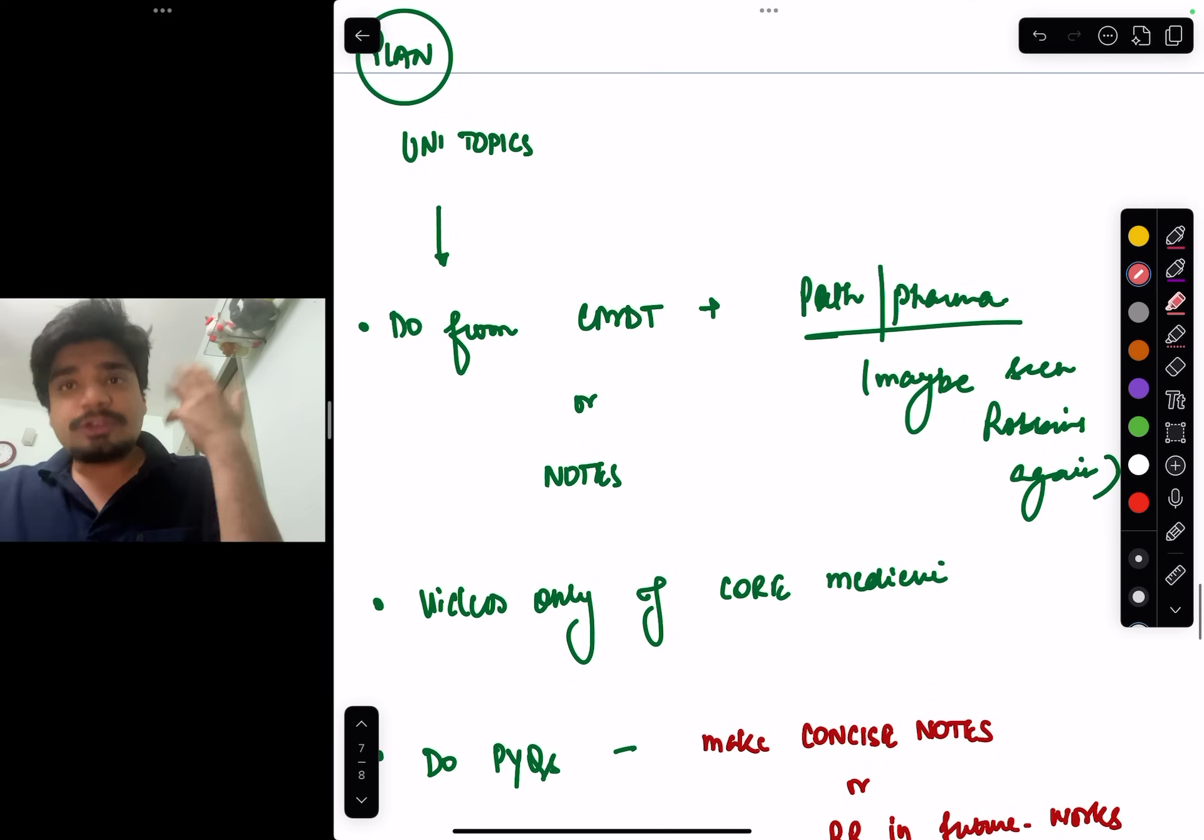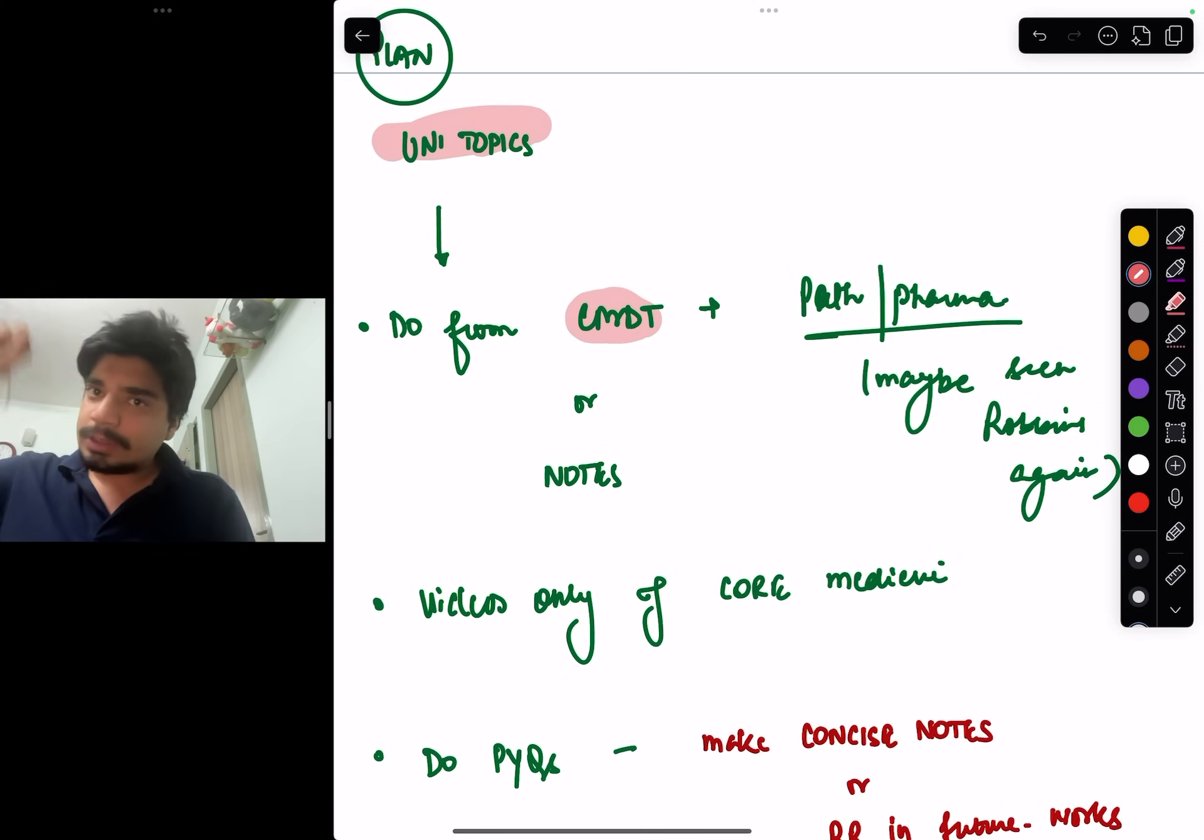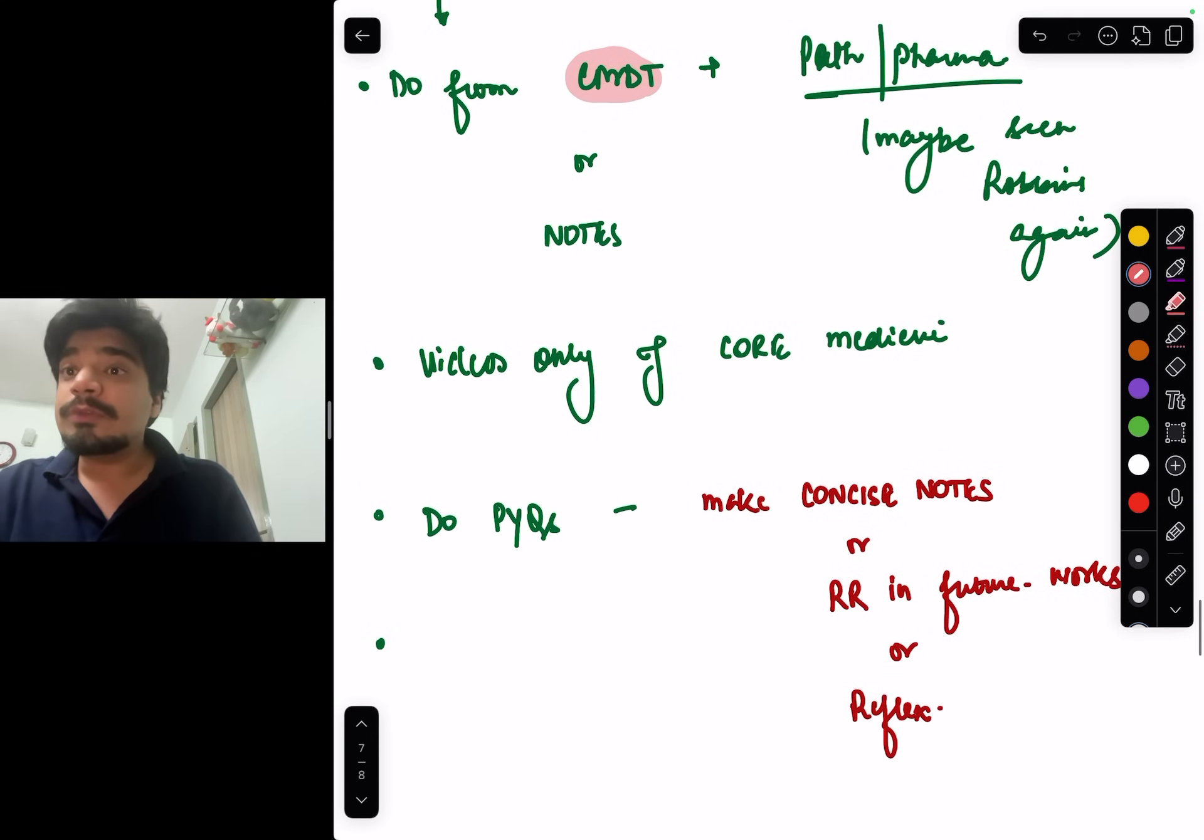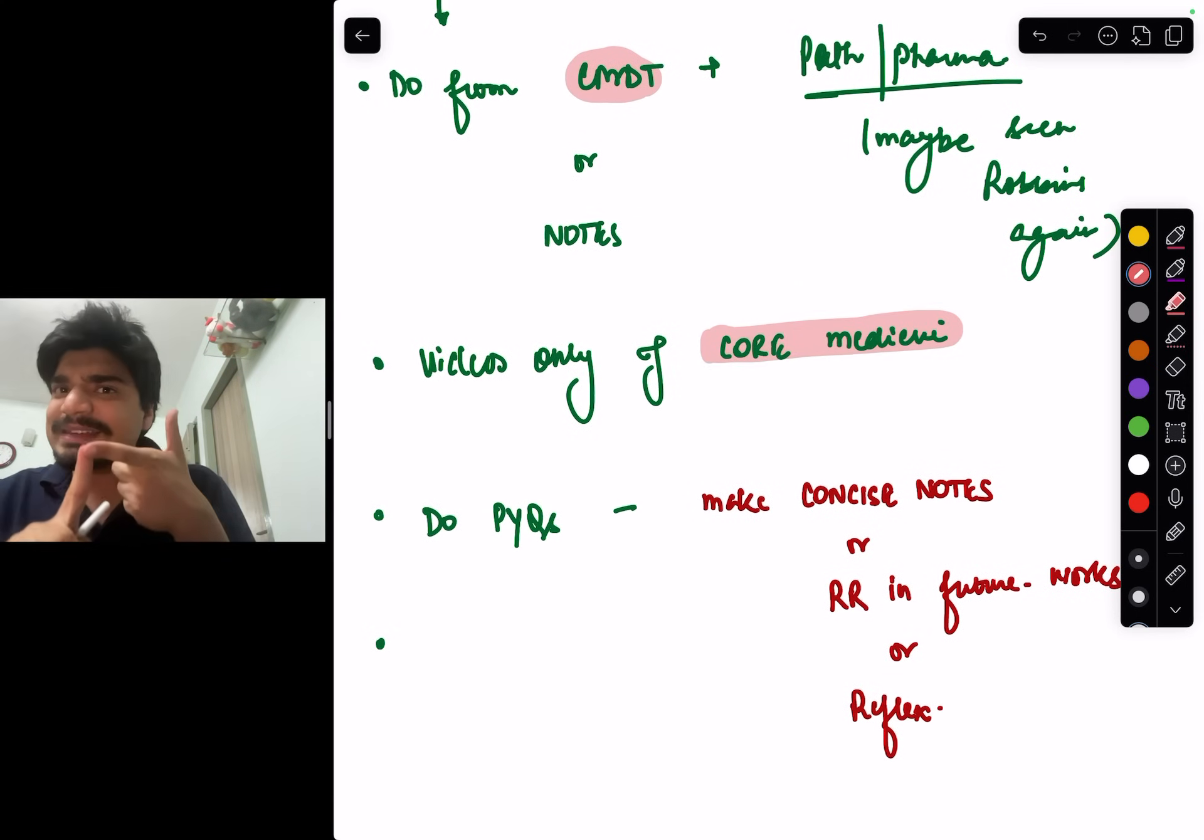So what should be the plan? Five to seven years university topics, do directly from CMDT, make your notes or in the notes tick them out. Which videos do you need? You don't need to watch all 200 videos. Videos of only core medicine. So basically ECG, conceptual videos.